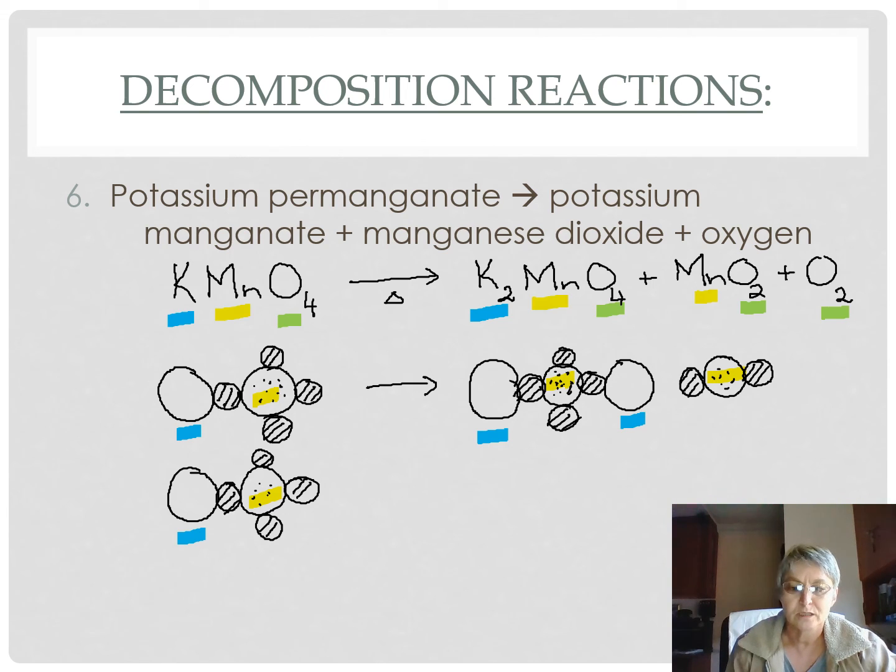And we need to sort out the oxygens. Here we have our diatomic element oxygen. So, let's see whether we've got enough oxygens in our reaction. 1, 2, 3, 4, 5, 6, 7, 8 on the left-hand side.